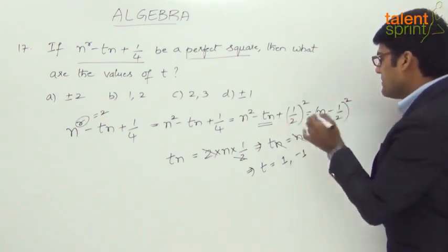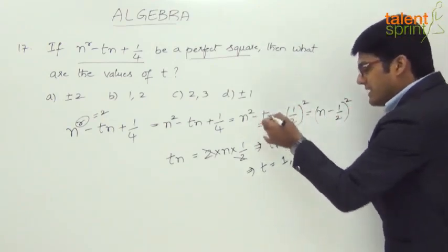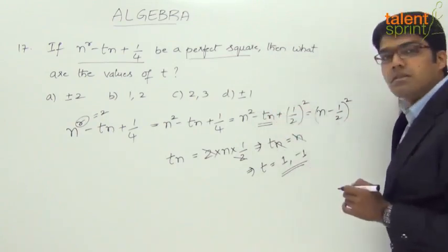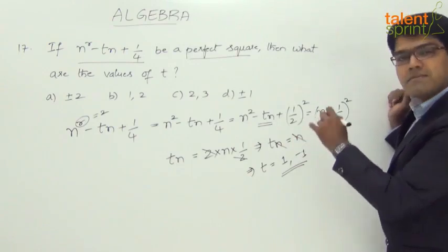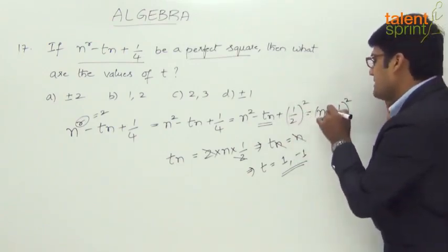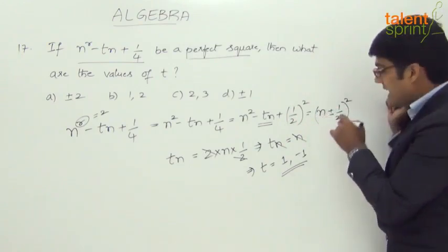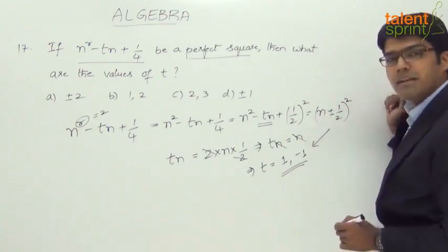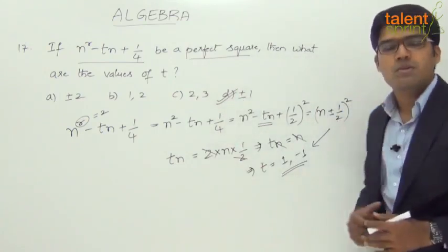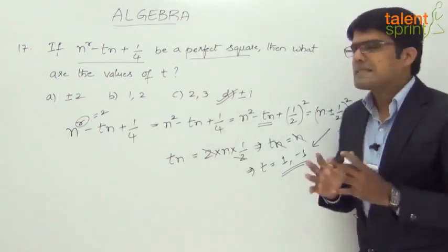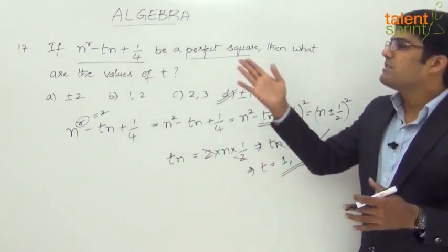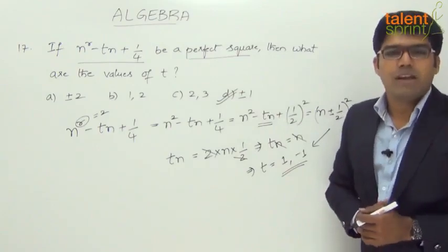So this can be taken as t here can be plus or minus 1, through which the equation or the expression becomes (n minus 1/2) whole square or (n plus 1/2) whole square. It can be expressed as (n plus or minus 1/2) whole square if t is plus or minus 1. Hence the answer has to be option d, t equals plus or minus 1. So as simple as that. Just focus on the 2ab part in such cases and see what should come in place of the unknown value.